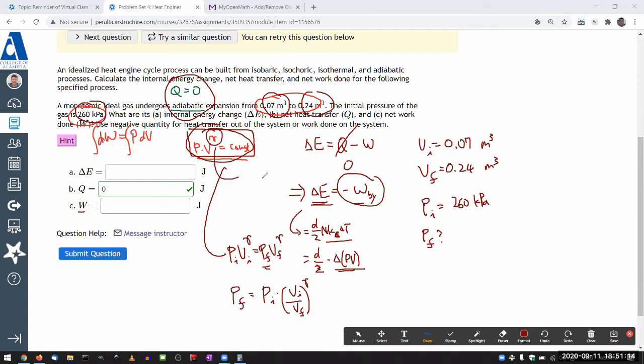And this is where you do have to memorize some things. Gamma, it comes from the ratio of one way to express it is in terms of the specific heat capacity under constant pressure over constant volume. That's one. There is actually another way to express it. You can express it in terms of the degree of freedom. In terms of degree of freedom, it's D plus two over D.